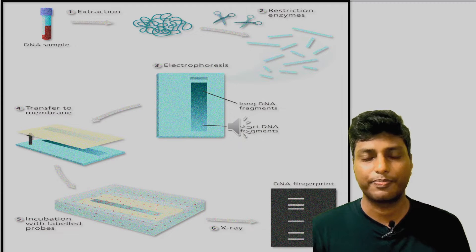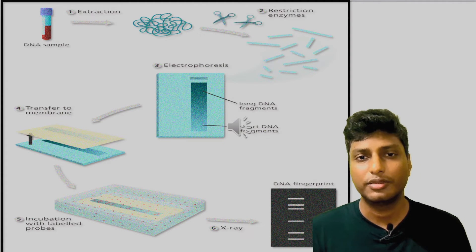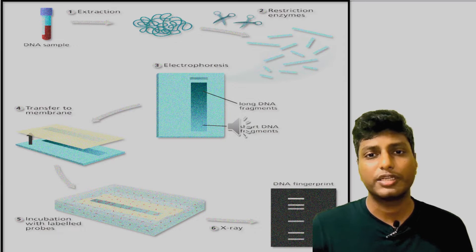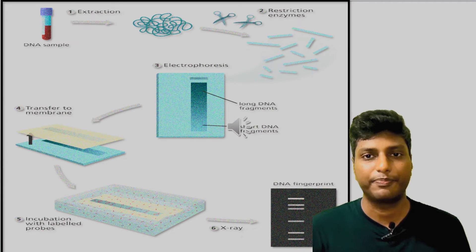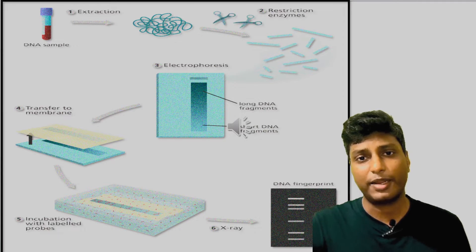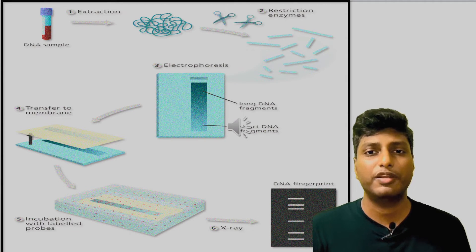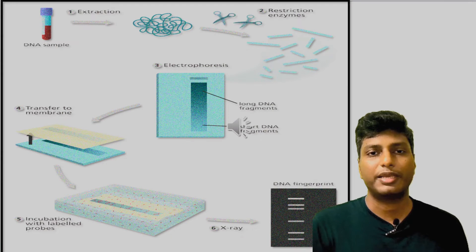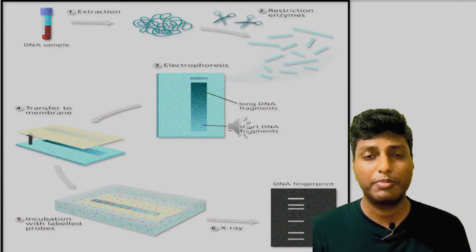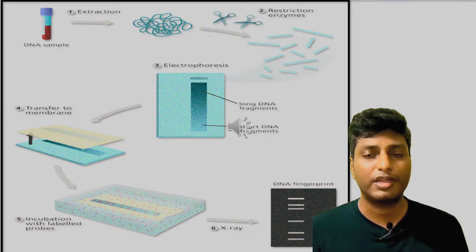In agarose gel electrophoresis, electricity is passed and the DNA fragments are separated based on their size. Smaller DNA fragments run faster towards the positive side of the agarose gel, while heavier fragments remain behind. Once the DNA fragments are separated, they are transferred onto a membrane made up of nylon or nitrocellulose.